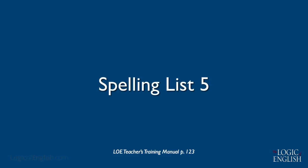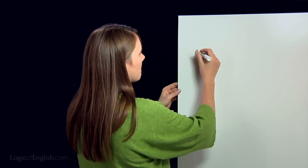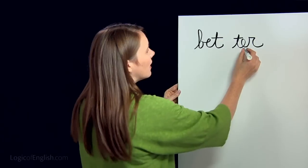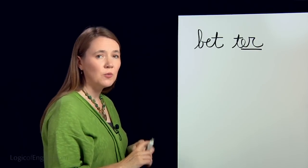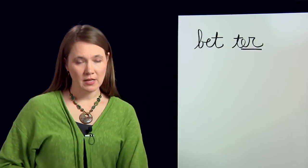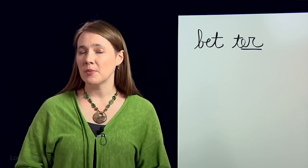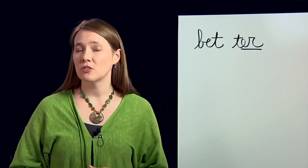Now let's do the dictation of spelling list five together. The first word is 'better' — 'This book is better.' Say to spell: bet-ter. First syllable: bet. Second syllable: ter. Write it out and sound it out. Underline the 'er.' Note: if there were only one T, it would say 'beater.' The second word is 'perfect' — 'She got a perfect score on her test.' Say to spell: per-fect. Two syllables: first syllable 'per,' second syllable 'fect.'